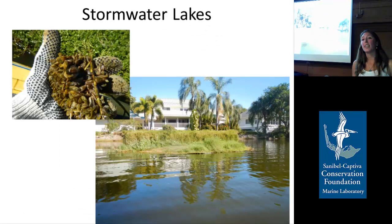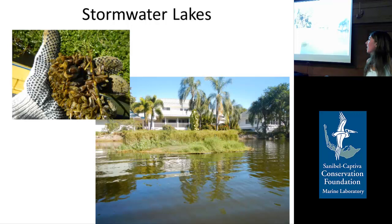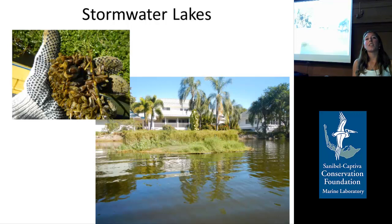Here in Sanibel, there are stormwater lakes in the Dunes neighborhood that have problems with excess nutrient runoff and algae blooms. There have been attempts to reduce nutrients by planting a floating island with plants to take up the nutrients. But this last year the island started to sink because it had Conrad's false mussels growing on the bottom — and while this is a nuisance, it's exciting because potentially these mussels could also be used to improve water quality.